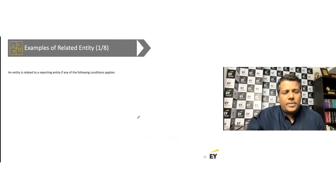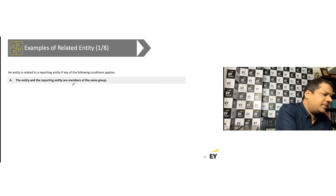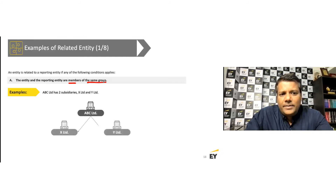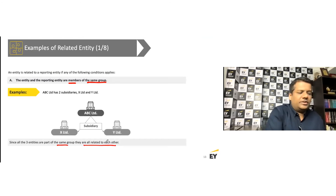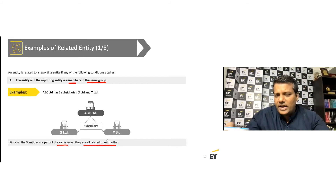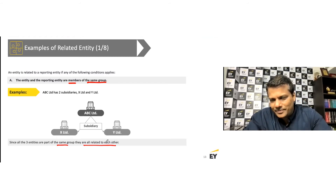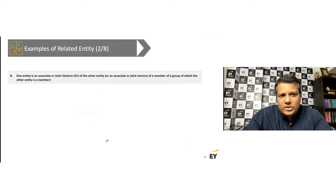Now for related entities: an entity is related to a reporting entity if any of the following conditions apply. First, the entity and reporting entity are members of the same group. Example: ABC Limited has two subsidiaries, X Limited and Y Limited. All three are members of the same group and hence related to each other. Any transaction between ABC Limited and X Limited, Y Limited, and X Limited and Y Limited — any combination — is a related party transaction.